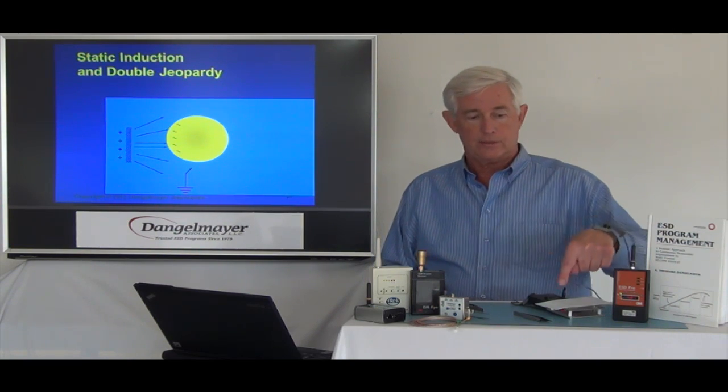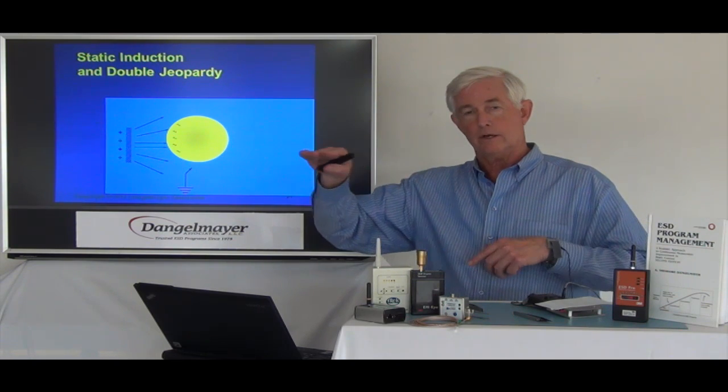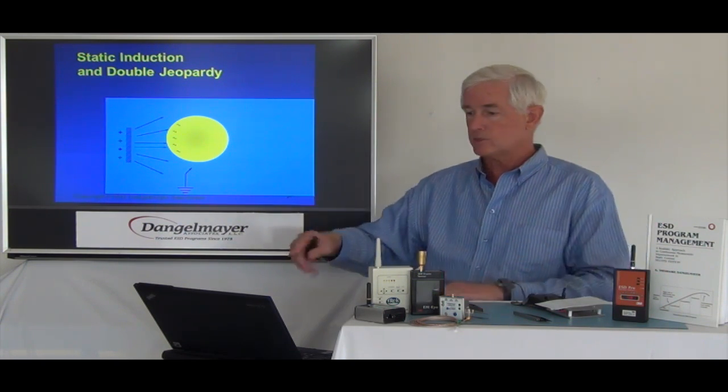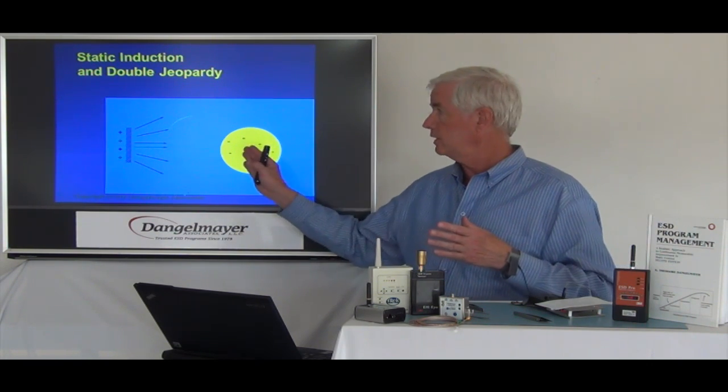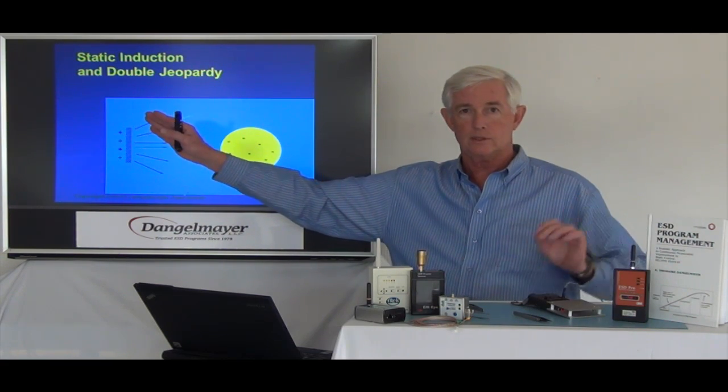Now at this stage, on the graph that you saw a minute ago, we had what appeared to be zero volts on the metal plate. That's what you would see until you separate the two—separate the metal object from the insulator, as I did earlier. I took away the insulator.